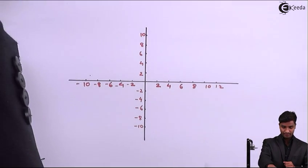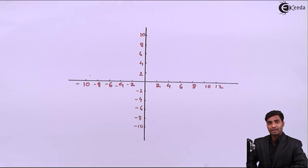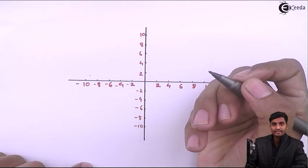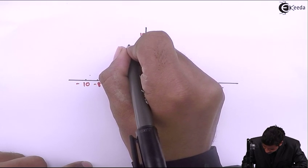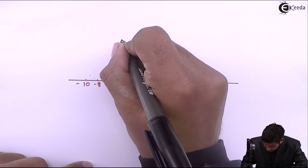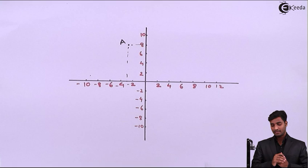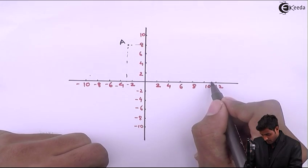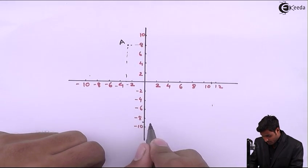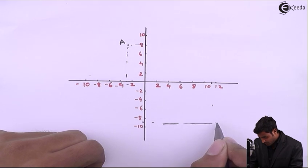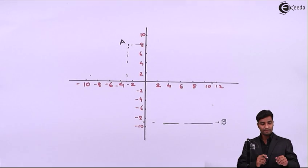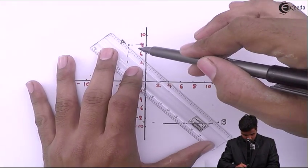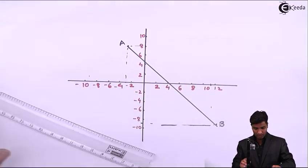We will plot line AB. A is (-3, 8), so x-coordinate is -3 and y-coordinate is 8, so point A comes somewhere here. B is (11, -9), so x-coordinate is 11 and y-coordinate is -9. After enlarging, this is the second point B. Now we will join this line AB — so this is line AB.